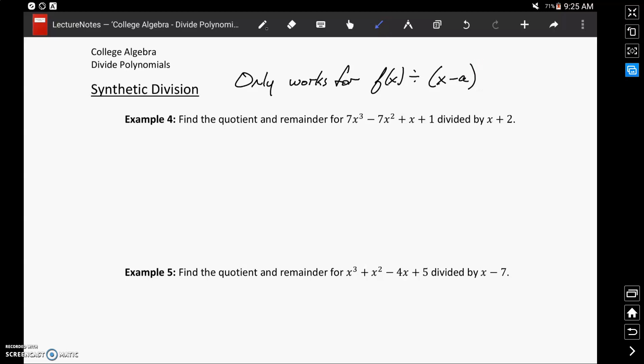If the form of what we're trying to divide by is anything different than that, we turn back to polynomial long division. In Example 1, we have a polynomial that we're looking to divide by x plus 2. To write that in the x minus a form, this means we would be dividing by x minus negative 2.